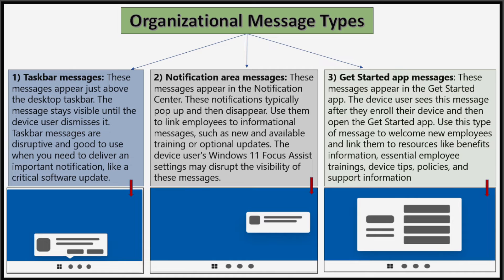There are three types of organizational messages: taskbar messages, notification area messages, and get started app messages. Taskbar messages appear just above the desktop taskbar and stay visible until the device user dismisses them. They are disruptive and good to use when you need to deliver an important notification like a critical software update.